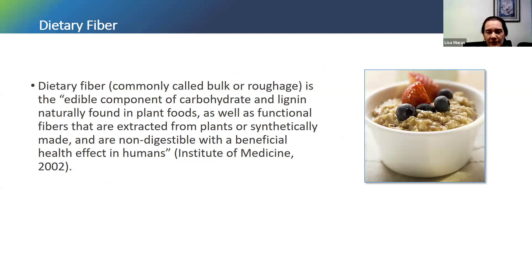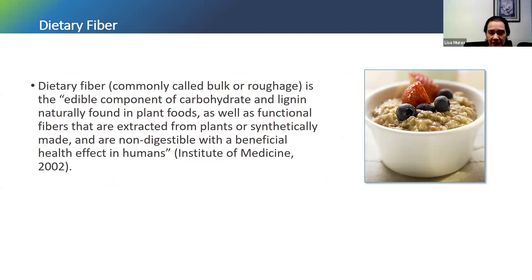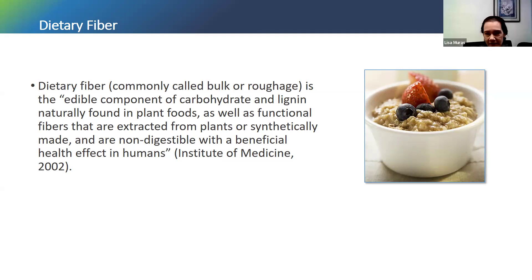Starting with a definition of fiber from the Institute of Medicine in 2002 — sometimes we refer to fiber as bulk or roughage — the formal definition from the IOM is an edible component of carbohydrate and lignin naturally found in plant foods, as well as functional fibers that are extracted from plants or synthetically made and are non-digestible with a beneficial health effect in humans. What we really want to take away from this is that fiber comes from plants — you're not going to obtain fiber from any animal foods such as meats or dairy products. And fiber has very diverse benefits to our health, helping reduce the risk for some chronic conditions.